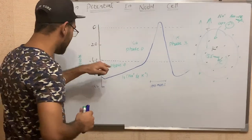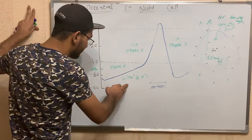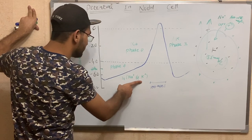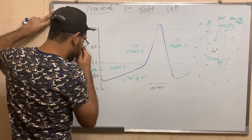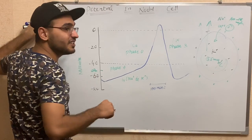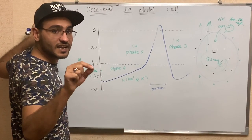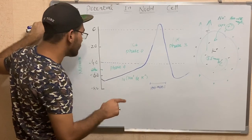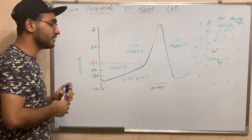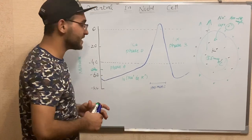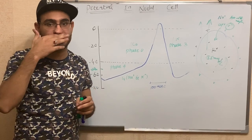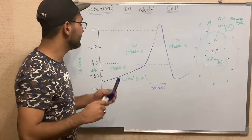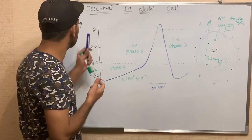In a quick review: in phase 4, the funny channels open, causing sodium and potassium influx. The millivolt reaches near -50, and when it reaches -50, a transient calcium influx occurs. The threshold membrane potential is -40 millivolts. When the potential reaches -40 millivolts, calcium influx occurs in large amounts.